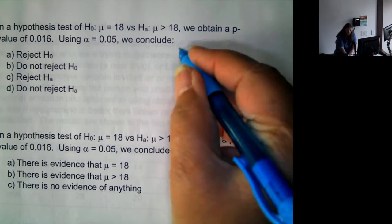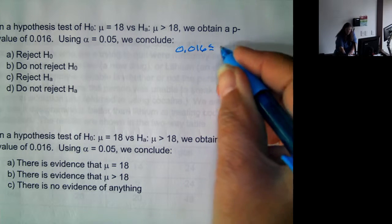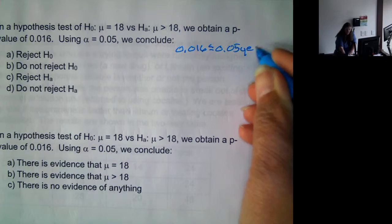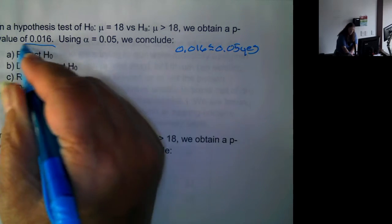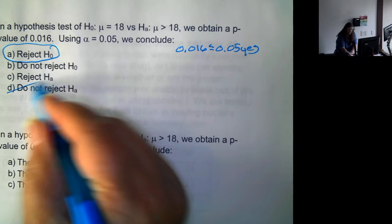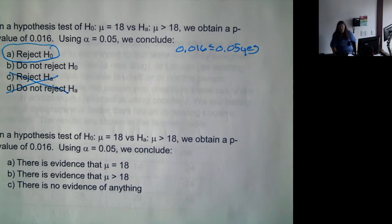Well, 0.016 is less than 0.05 and it is. So our conclusion is to reject the null hypothesis. C and D are never viable options. We never reject or fail to reject the alternative hypothesis. It's always the null.